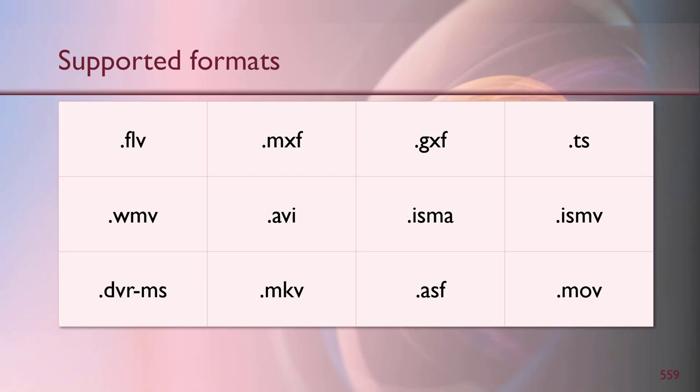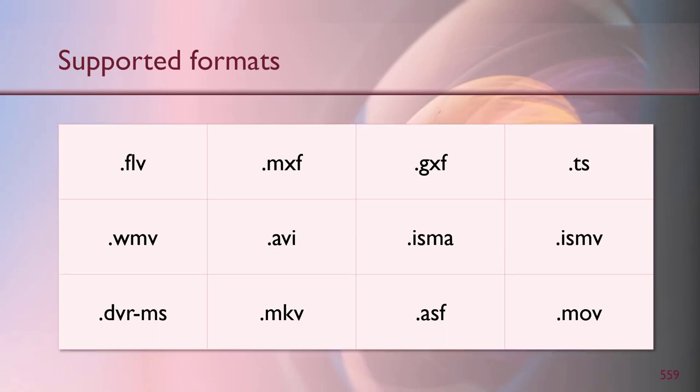If bandwidth goes down, Stream will automatically understand that and downgrade the quality of the video, but it'll keep it running and audio will not break as much as possible — like YouTube does. This is like a corporate YouTube for you. Remember all videos on Stream are corporate data, so they are only viewable by your staff. People who have access to Office 365 — your partners and customers — those videos you cannot put on Stream because you simply cannot share them outside.